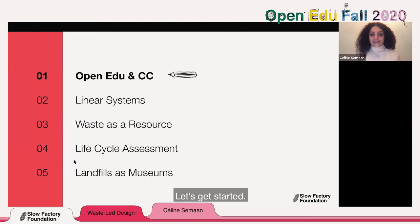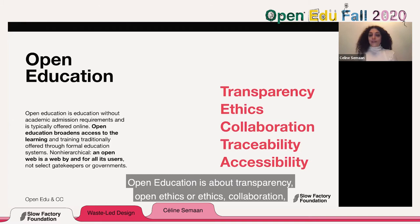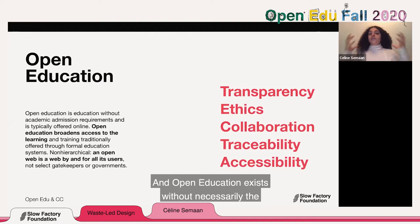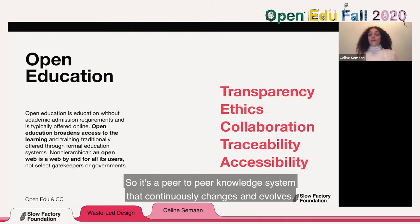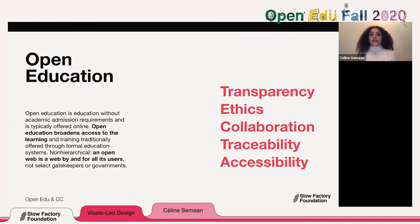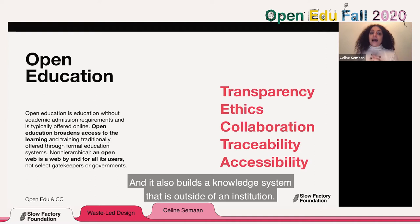Open education is about transparency, open ethics, collaboration, traceability, and accessibility. Open education exists without necessarily an academic institution behind it. It's a peer-to-peer knowledge system that continuously changes and evolves. It is a more forgiving framework because it allows for trial and error. It also builds a knowledge system outside of an institution that is much more democratic.